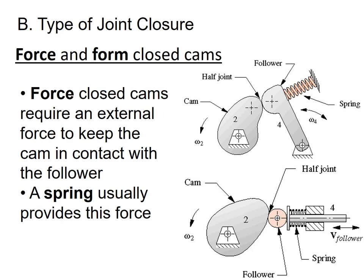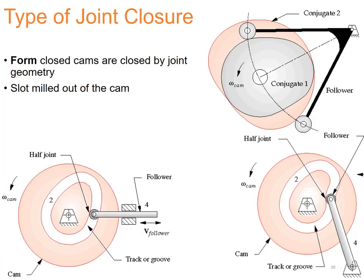CAM can also be classified on the basis of type of joint closure, and they are classified into two groups: force closed cams and form closed cams. In force closed cams, an external force is required to keep the cam in contact with the follower, and generally a spring is used for this purpose, as shown in the diagram. In form closed cams, contact is maintained by joint geometry or by a slot milled out of the cam, as shown in the diagram.